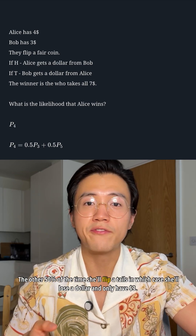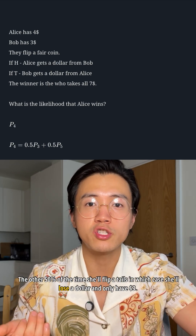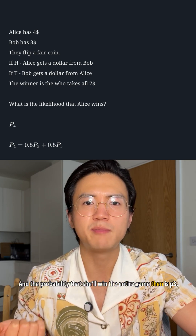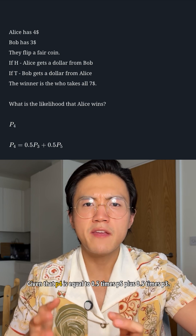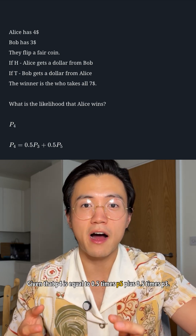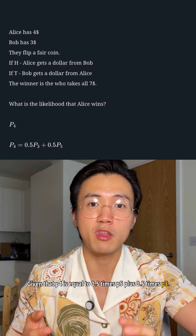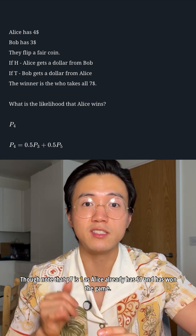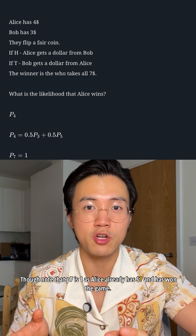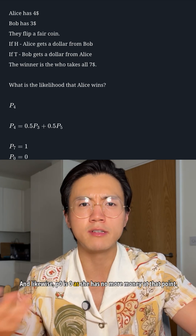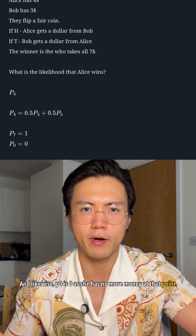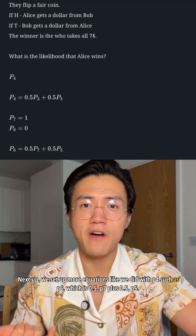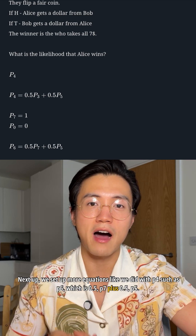The other 50% of the time she'll flip tails, lose a dollar, and only have $3, so the probability she wins is P3. Therefore, P4 equals 0.5 times P5 plus 0.5 times P3. Note that P7 equals 1, since Alice already has all $7 and has won, and P0 equals 0 as she has no money left. We can also set up P6, which equals 0.5 times P7 plus 0.5 times P5.